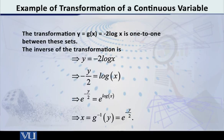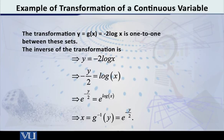Now let us first check whether this function is 1-to-1. You can check it very quickly and agree that yes, it is 1-to-1. y = -2 log(x) — whatever value of x you put in, you get exactly one value of y. Our function is y = g(x), and g(x) = -2 log(x).